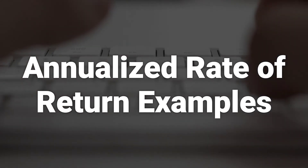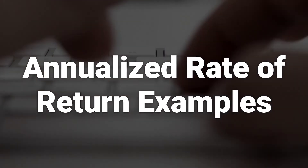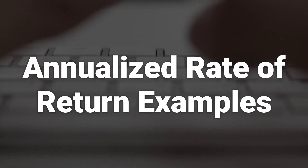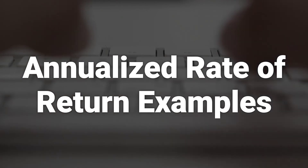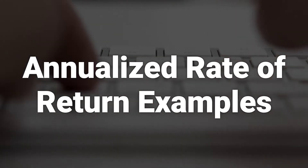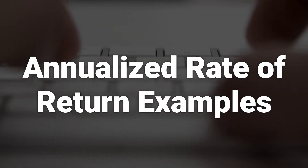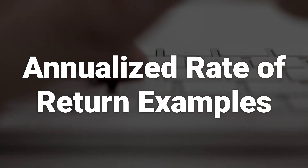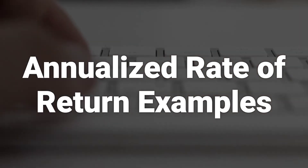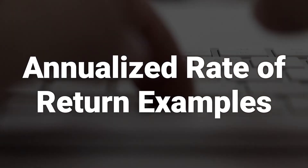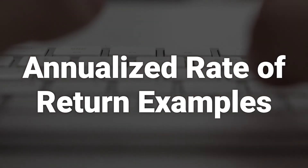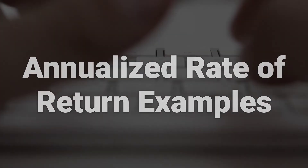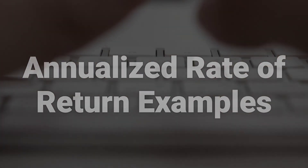For example, if an investor invested $50,000 into a mutual fund and, four years later, the investment is worth $75,000, the annualized performance can be calculated using the formula. It's important not to confuse annualized performance with annual performance, as the former takes compound interest into account.